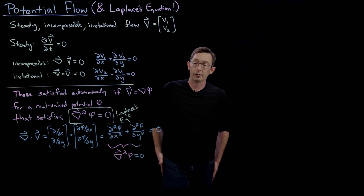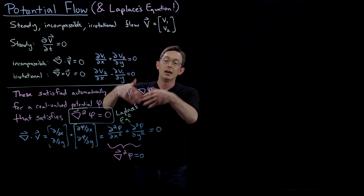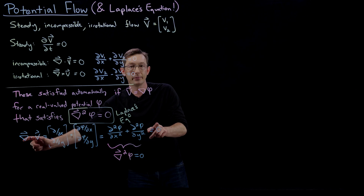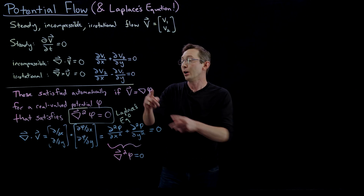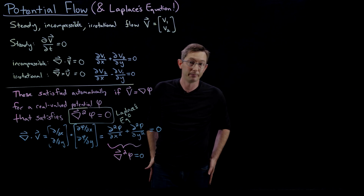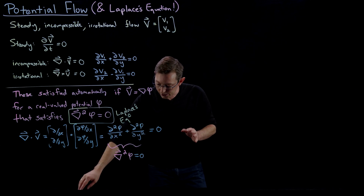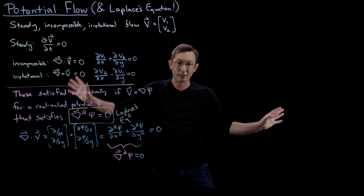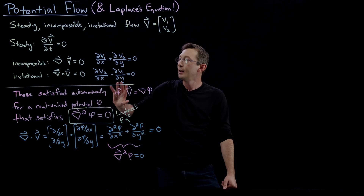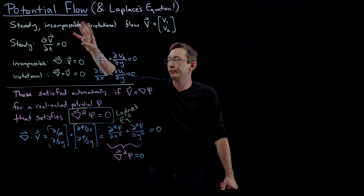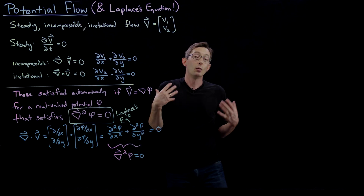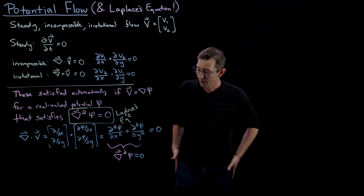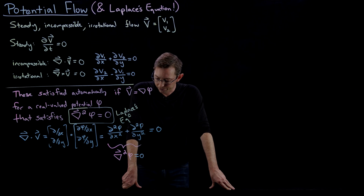What we've shown is that if our vector field v is the gradient of a potential that satisfies Laplace's equation, we get incompressibility for free — and we already had irrotationality because it's a gradient field. This is extremely useful. Laplace's equation comes up everywhere in the physical sciences, and this potential flow vector field is a particularly important class of vector fields for analyzing irrotational, incompressible fluid flows.